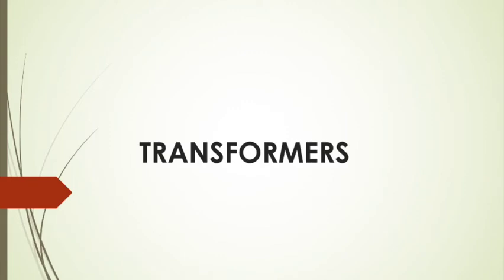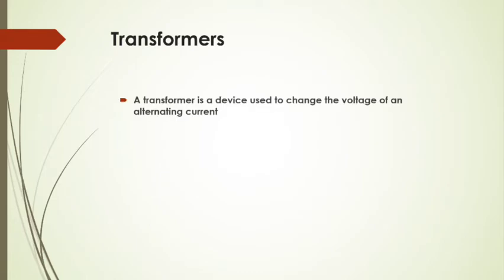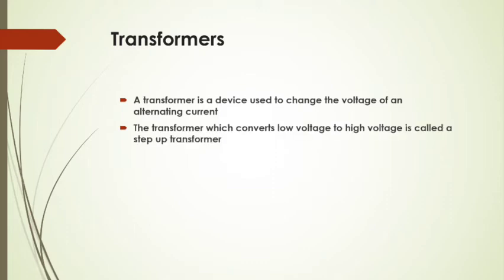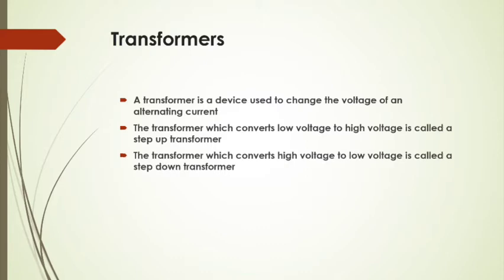The next and last topic of our unit on electricity is transformers. A transformer is a device used to change the voltage of an alternating current. The transformer which converts low voltage to high voltage is called a step-up transformer, and one which converts high voltage to low voltage is called a step-down transformer.